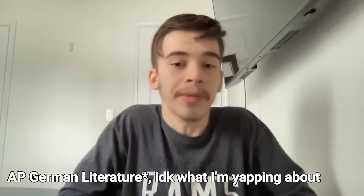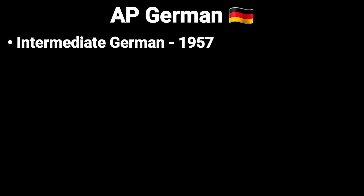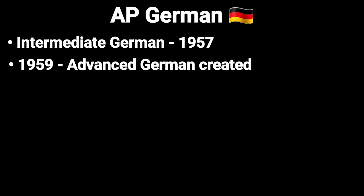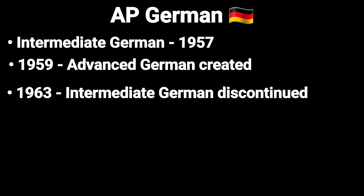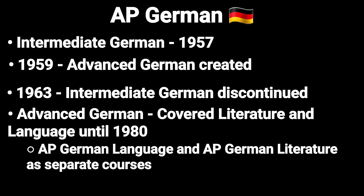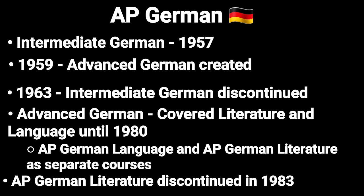AP German also has a discontinued history. A first AP German exam called Intermediate German was administered in 1957. In 1959, Advanced German was added, and four years later, Intermediate German was eliminated altogether. The course and exam included both language and literature components until 1980, when AP German Language and AP German Literature were introduced. The AP German Literature exam was then dropped in 1983.